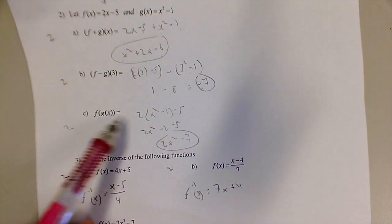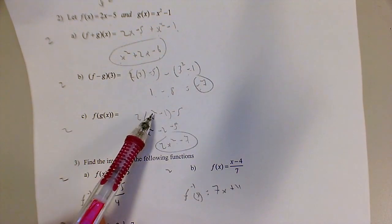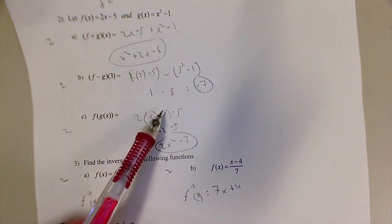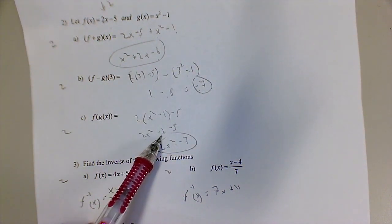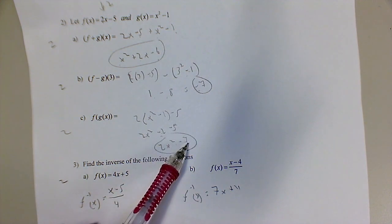This is pretty straightforward. You plug g into x, so 2 times what g is, x-squared minus 1. Distribute, make sure you're distributing that 2, so it's minus 2, 2x-squared minus 7.